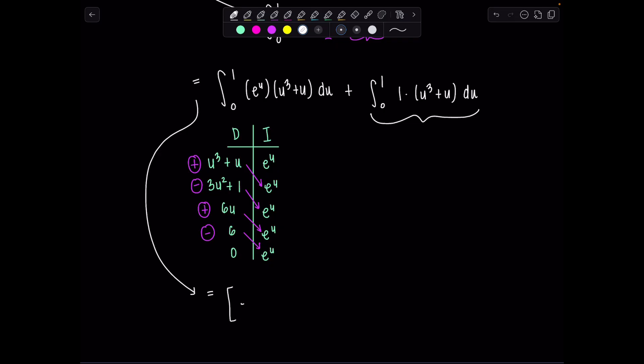So I'm just going to write it once outside. Why rewrite it so many times? So we'll have u³ + u - 3u² - 1 + 6u - 6.